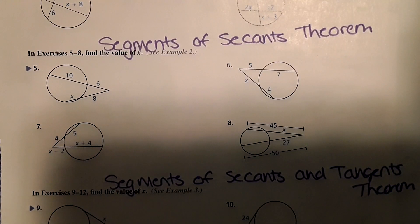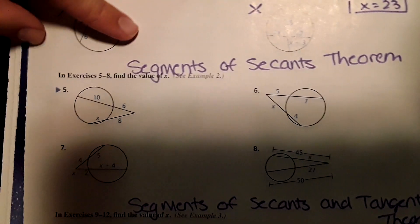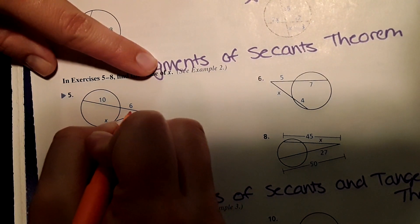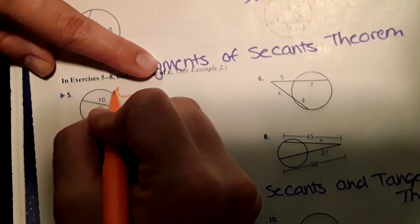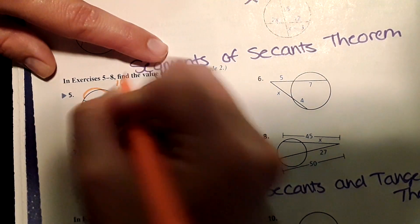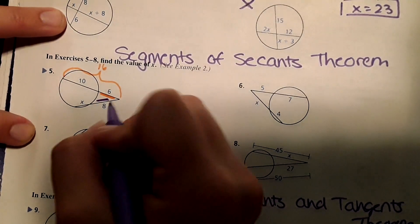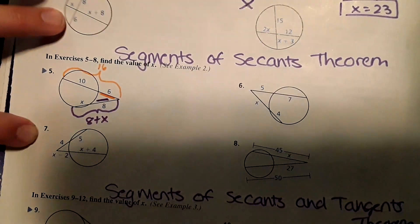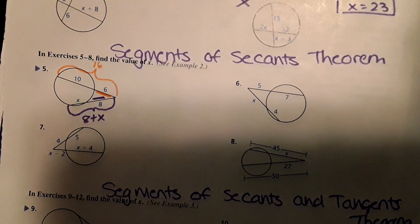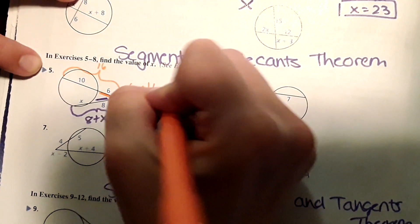For this type of problem, what we're going to do is take this shorter segment here and multiply it by the entire length, which would be 16. Then on the other side, same thing: the shorter segment times the whole length. The whole length would be 8 plus X. So the way I'm setting this up is 6 times 16 equals 8 times X plus 8.